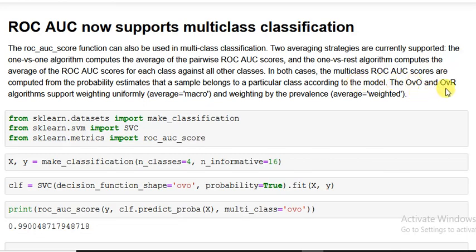The OVO (one-versus-one) and OVR (one-versus-rest) algorithms support weighting uniformly, average of the macro, and weighting by the prevalence (average weighted). Now let's go to the code.